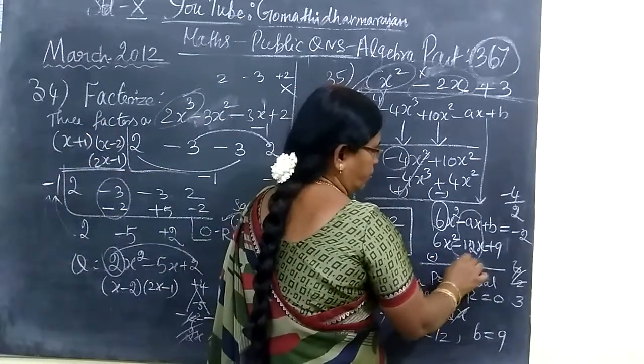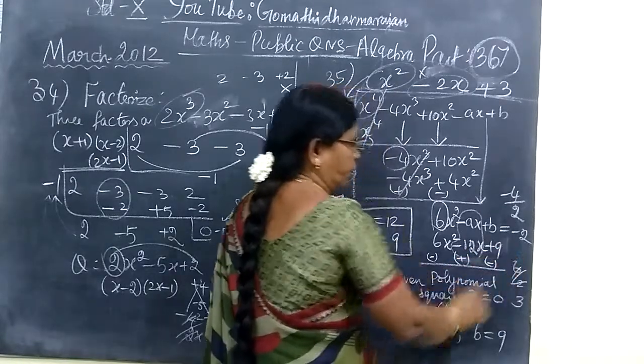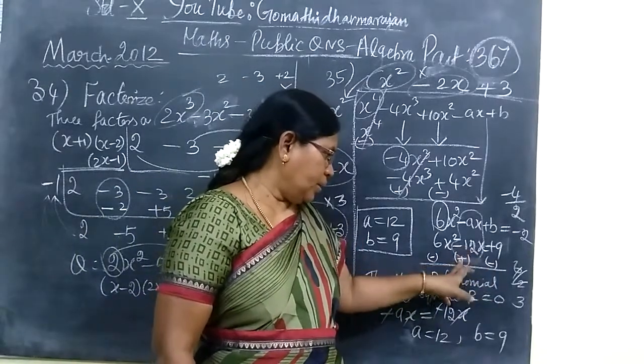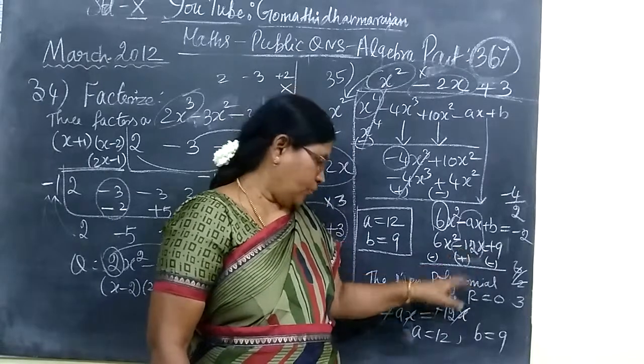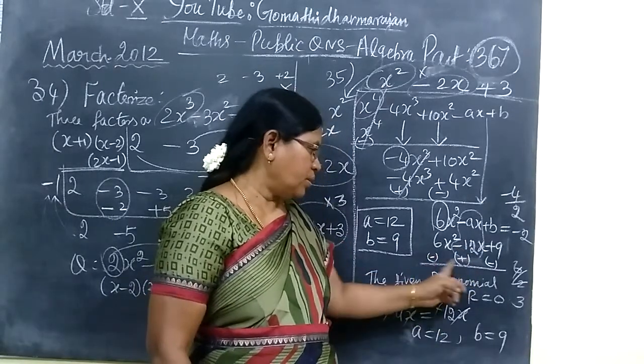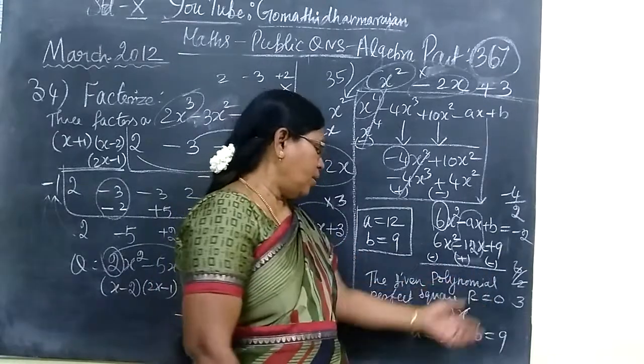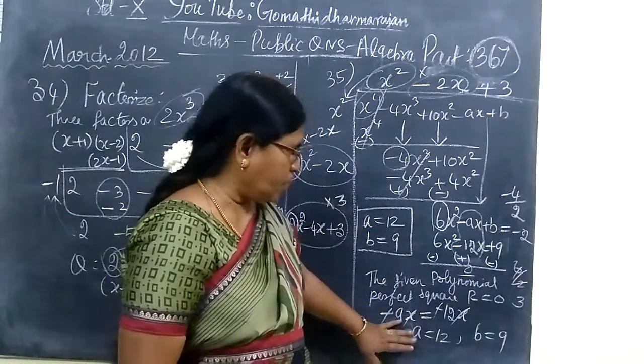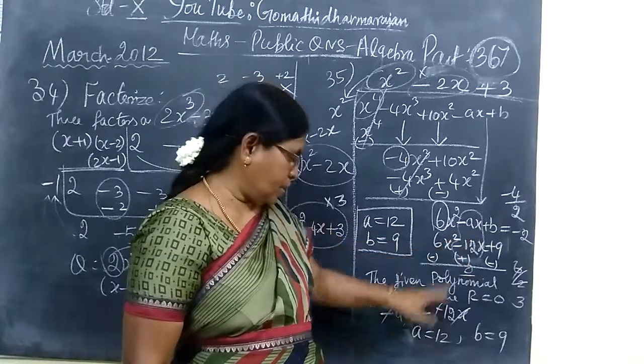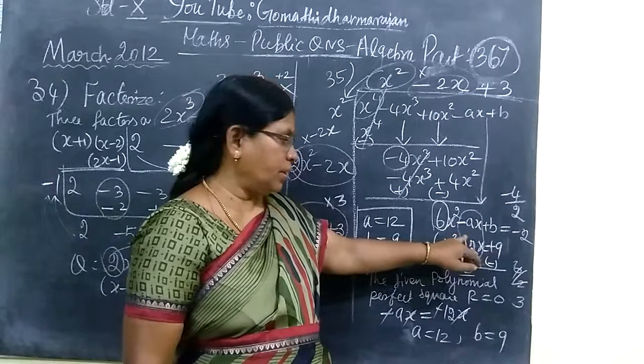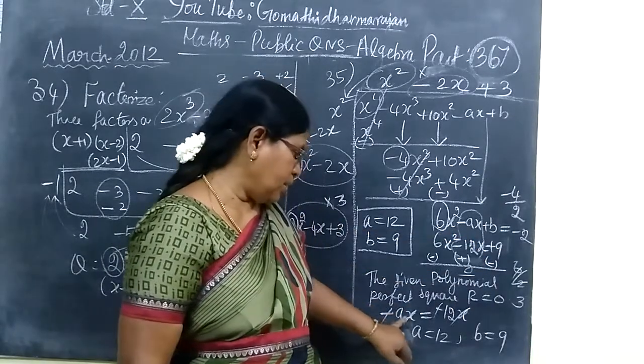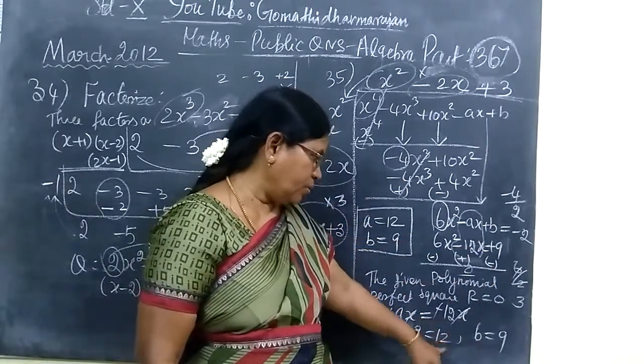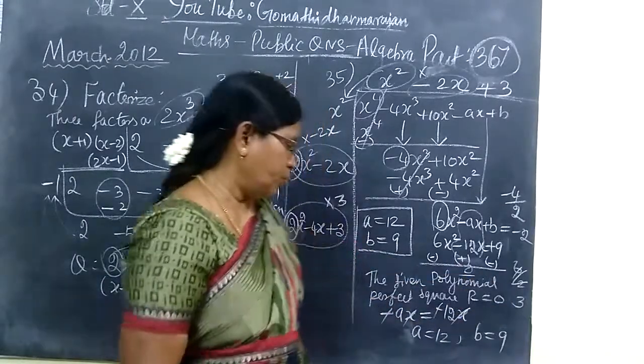A equal to 12 and B equal to 9. If we change the sign, minus plus plus minus. Why changing the sign? Since the remainder should be definitely zero. The sign is plus and plus, the minus will be minus. The sign is ready. Thank you.